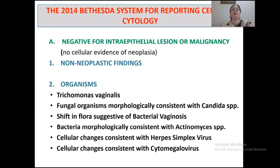In the Bethesda system, organisms fall under the category of 'Negative for Intraepithelial Lesion or Malignancy.' These organisms are Trichomonas vaginalis, Candida, bacterial vaginosis, Actinomyces, HSV, and CMV. Cervical cytology has relatively high specificity for most of these organisms, although a confirmatory test is often merited. Nowadays, LBC vials are routinely used for both morphology and microbiologic testing, including Neisseria gonorrhoeae, Chlamydia trachomatis, and high-risk HPV.